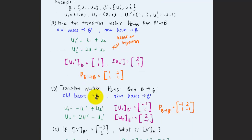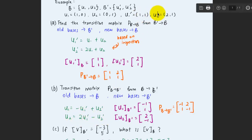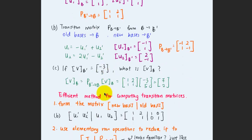Now let's work on the reverse: the transition matrix from B to B prime. Here the old basis is B and the new basis is B prime. By inspection, u1 (the old basis) can be obtained from -1·u1' + 1·u2', and u2 gives 2·u1' - 1·u2'. Expressing these as coordinate vectors: (-1, 1) and (2, -1). Placing them side by side as column vectors gives the transition matrix from B to B prime: [[-1, 2], [1, -1]].